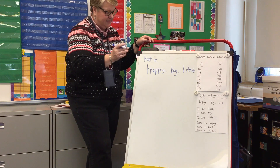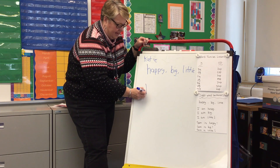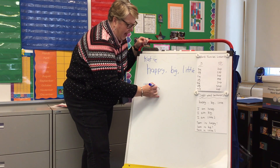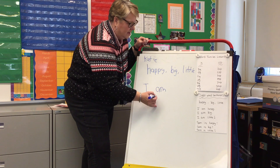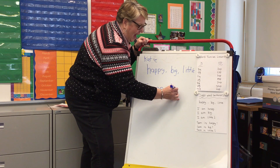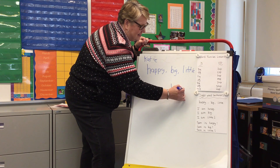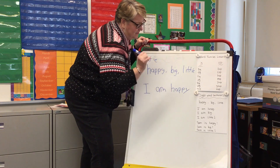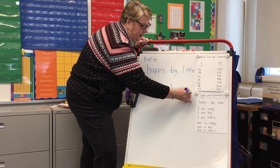The first sentence could be 'I am happy.' It has to start with an uppercase letter. I, A like apple, M like mouse, and then 'happy.' Sometimes the Y makes a different sound — it makes the E sound. So happy. And I could put a period here.